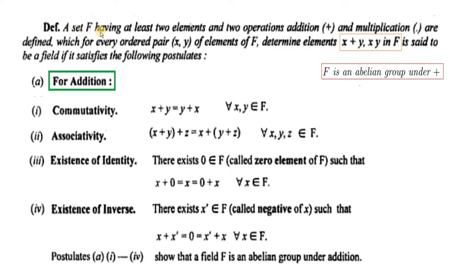A set F having at least two elements and two operations — addition and multiplication — are defined, and which for every ordered pair x, y of elements of F, determines the elements x plus y and x·y. F is said to be a field if it satisfies the following postulates.